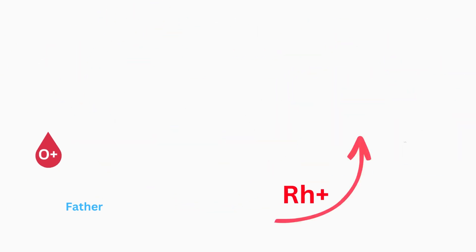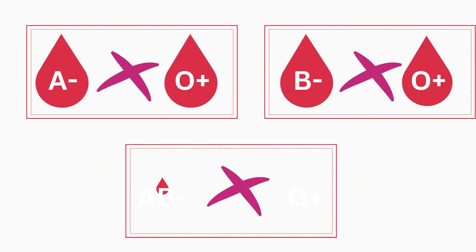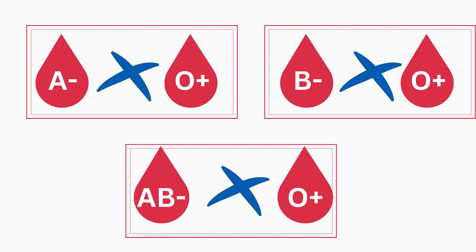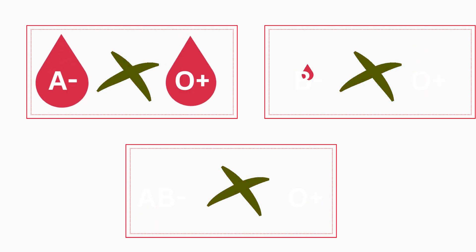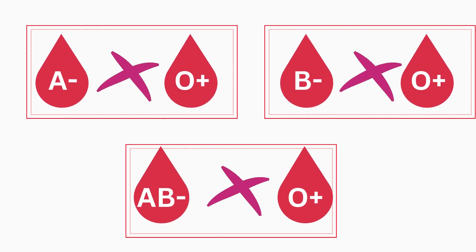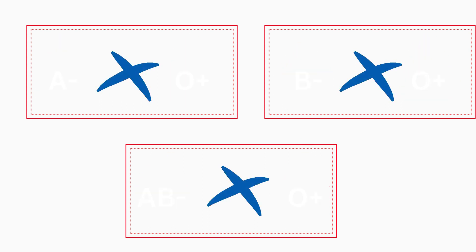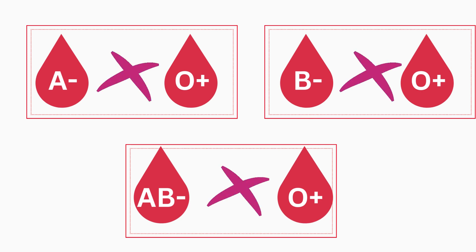Coming to the conclusion: A negative with O positive, B negative with O positive, and AB negative with O positive are considered to be less compatible for marriage. That's all for today's video on blood group compatibility.